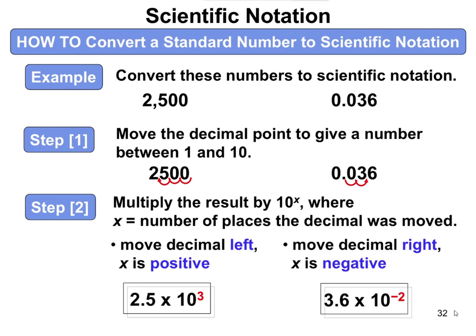Let's look at some examples. If you have 2,500, you take the decimal point — there's not one shown, but you could imagine it after the zero. If you move it to the left 1, 2, 3 times, that gives you a number between 1 and 10: 2.5. Then multiply the result by 10 to the x, where x is the number of decimal places moved. If you move it to the left, x is positive; if you move it to the right, x is negative.